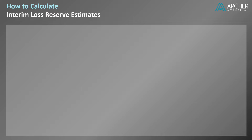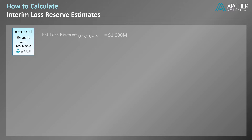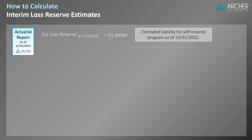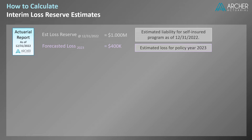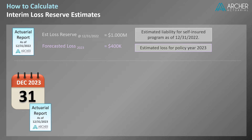In this example, let's assume we have an actuarial report for a self-insured program as of year-end 2022. This report provides loss reserve estimates as of 12/31/2022 equal to one million dollars, reflecting the estimated liability of the self-insured program. The report also provides a loss forecast equal to four hundred thousand dollars, reflecting the estimated loss associated with the upcoming policy year, which is 2023. Suppose a new actuarial report will not be available until year-end 2023, but we need an estimate of loss reserves as of 3/31/2023 — how can these interim loss reserves be estimated?